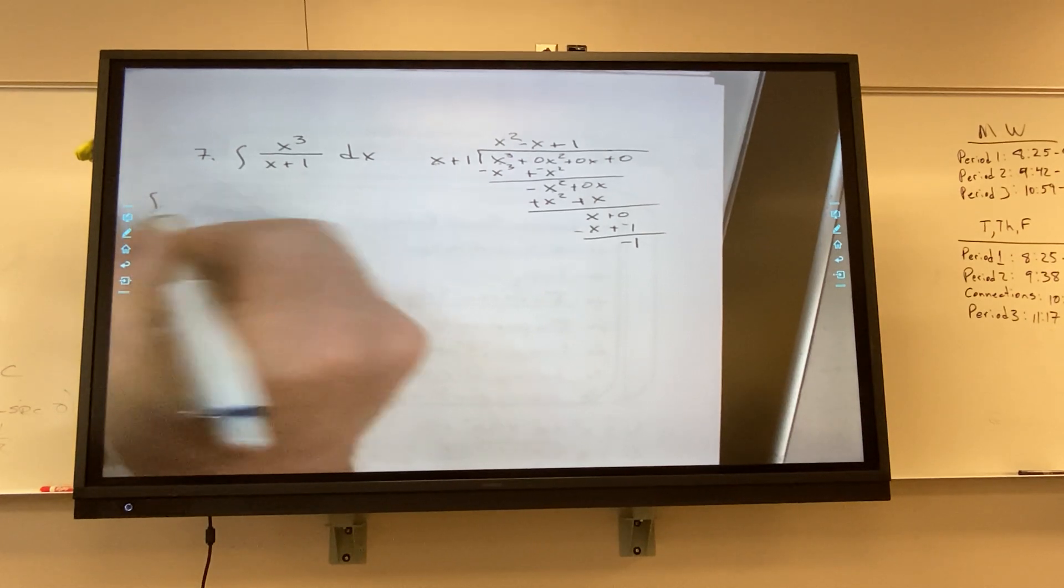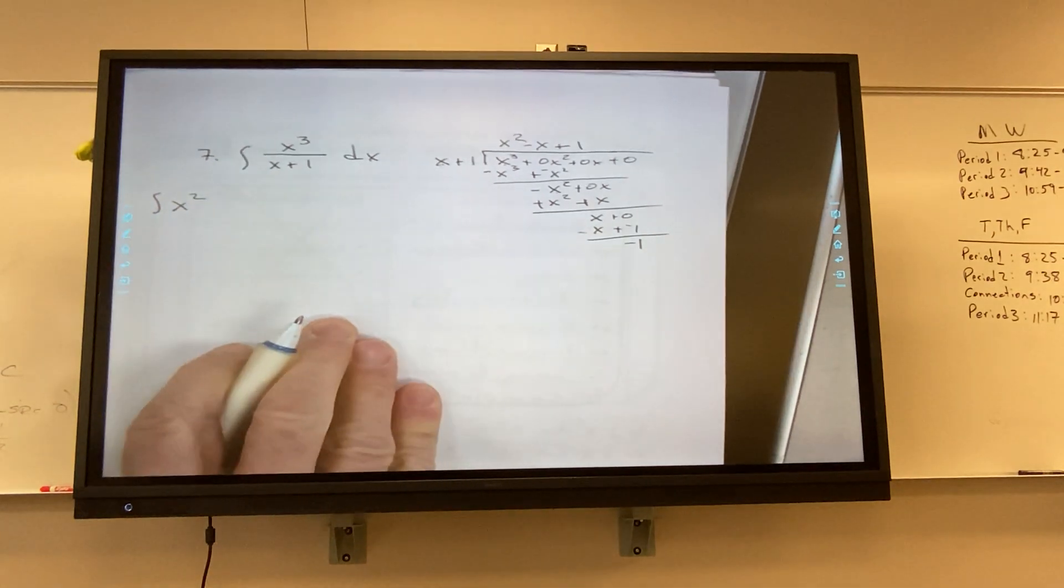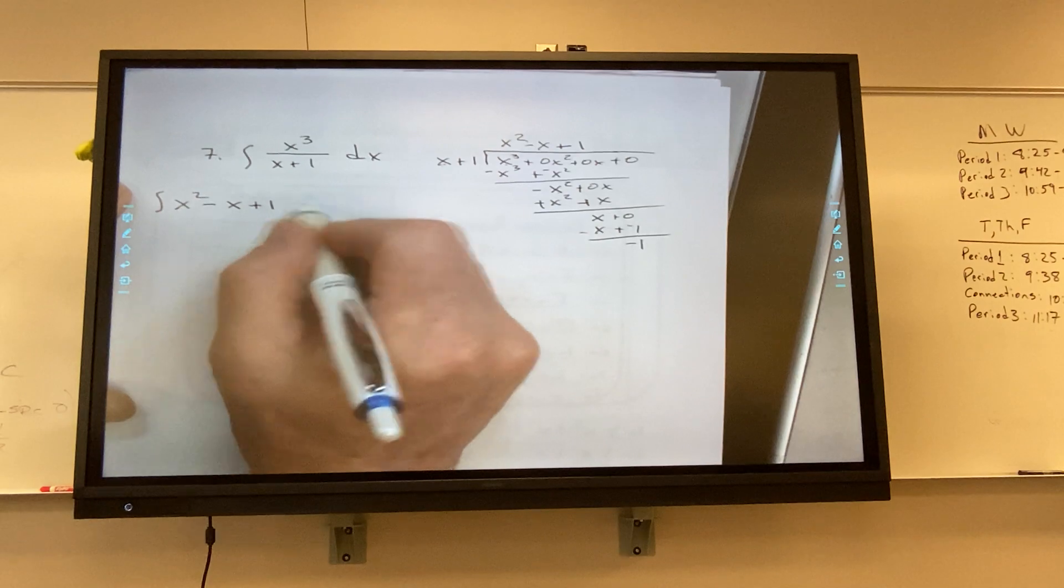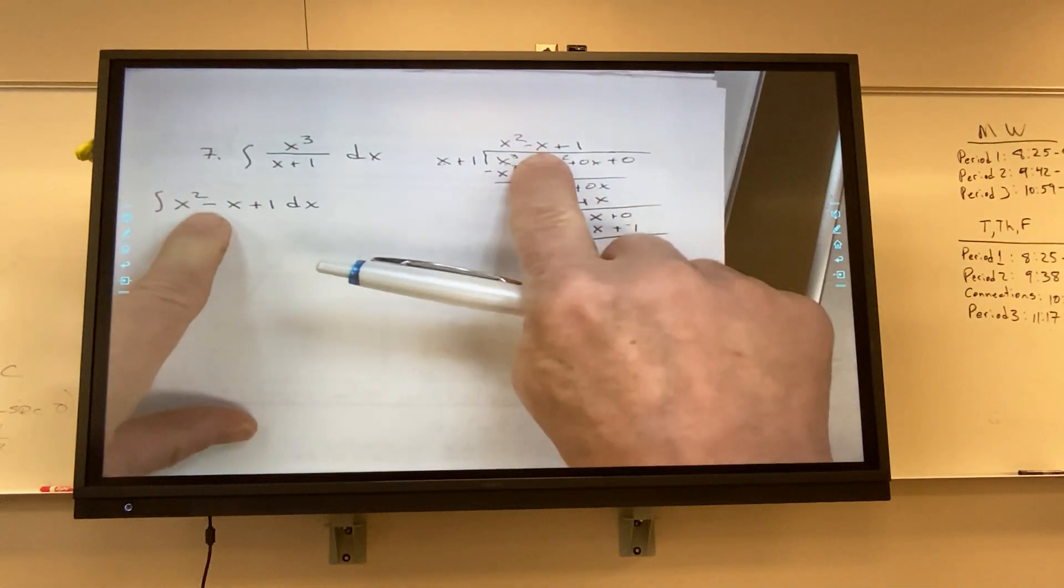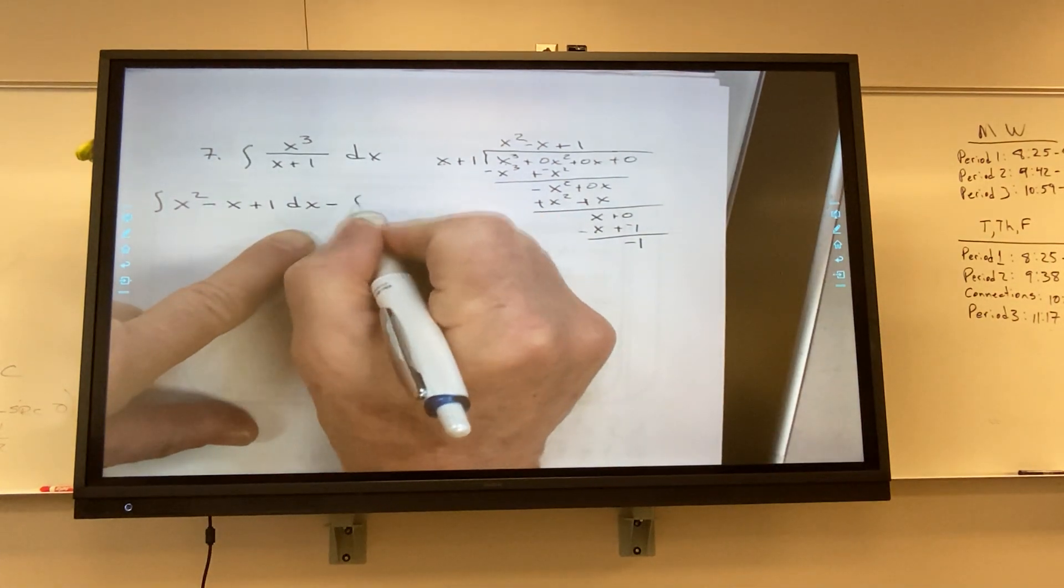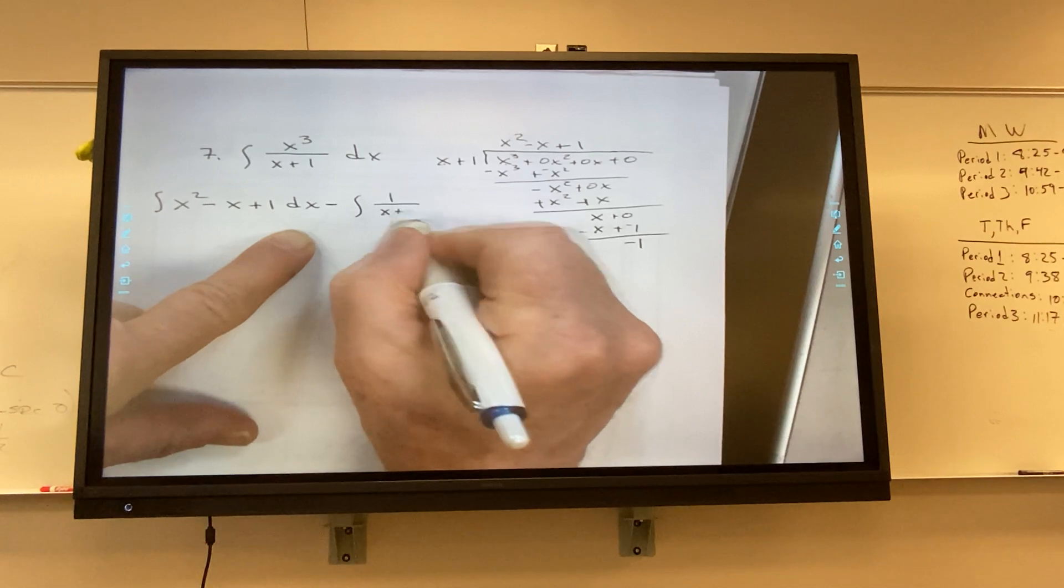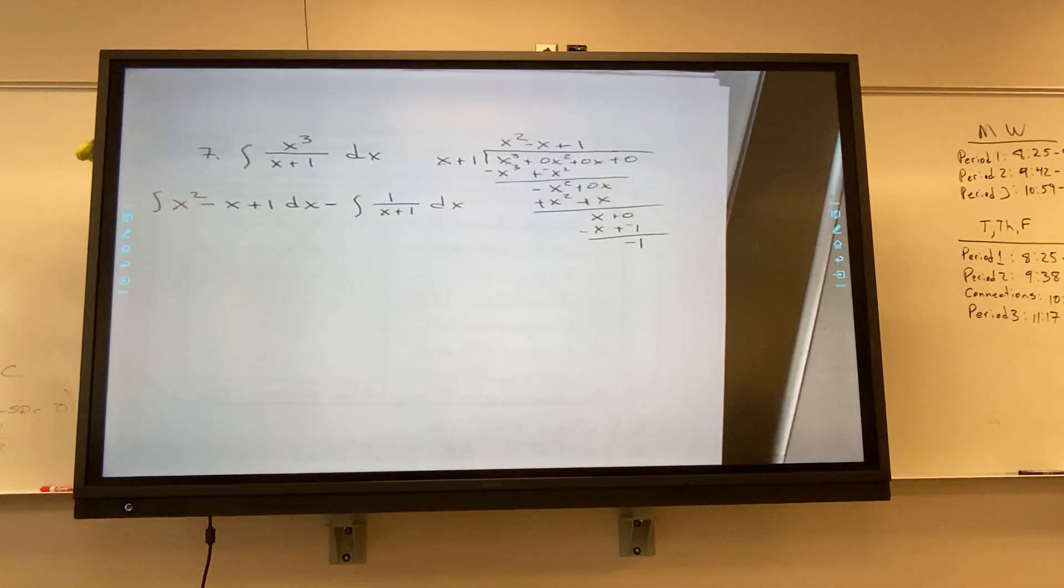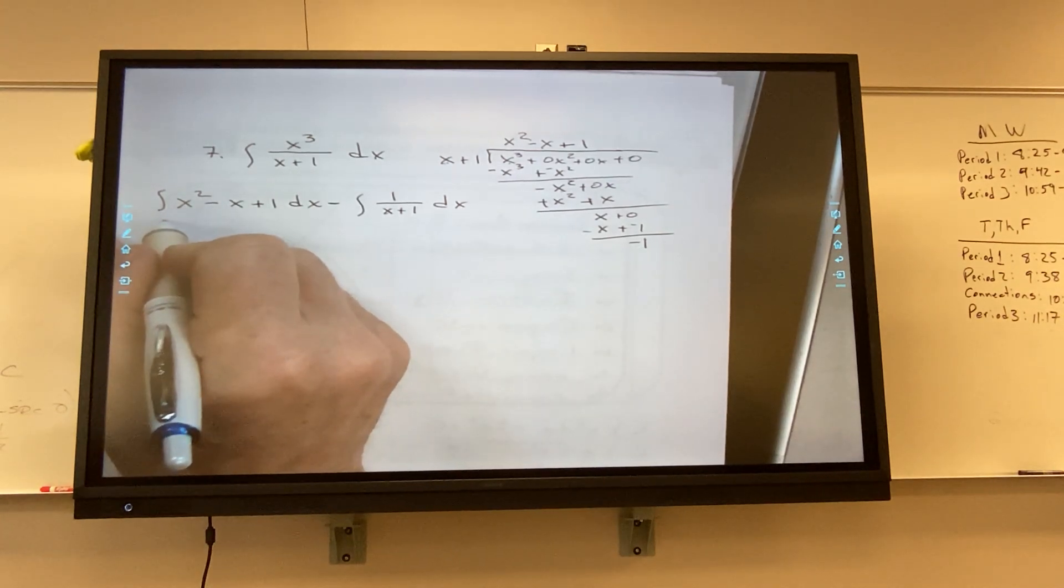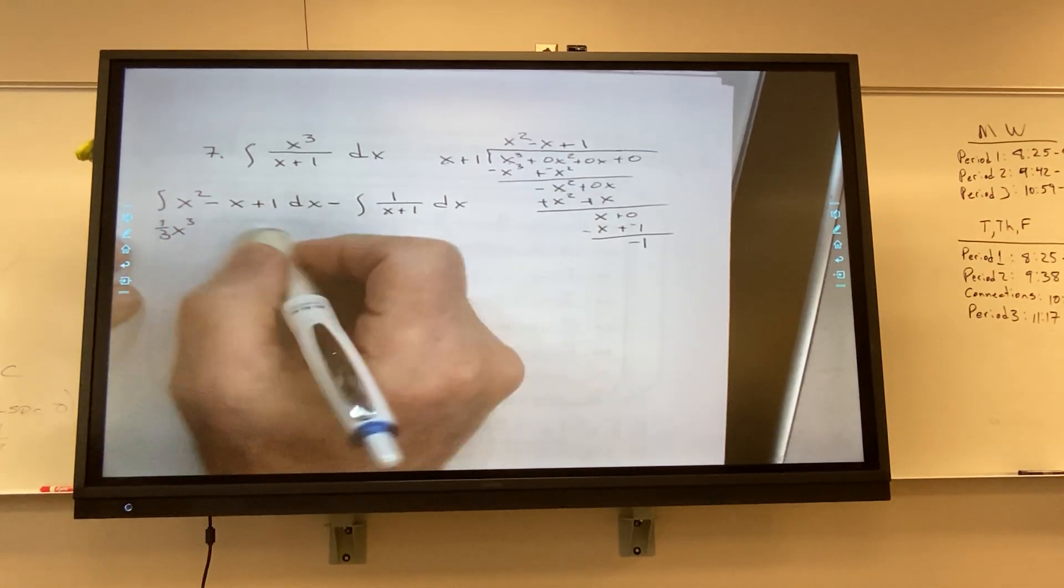Okay. And so what can I multiply x by to make it x? One. So I get x plus one. There's a zero here. Change the signs and I get negative one, would you agree? So now my integral is x squared minus x plus one dx.